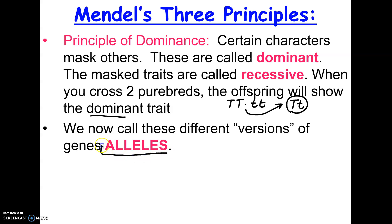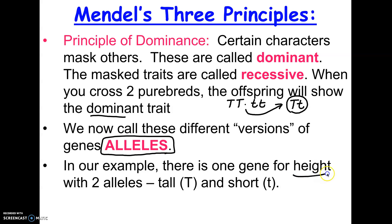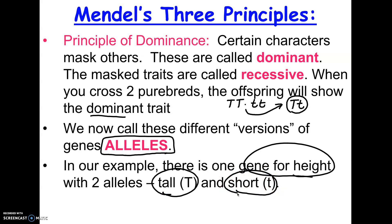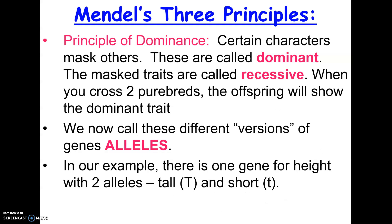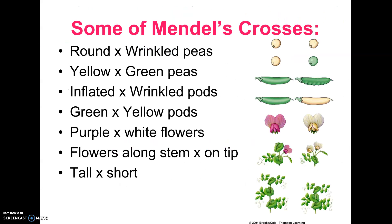We use the term allele to represent a version of a gene. In this cross, there was one gene for height but it had two alleles: big T for tall and little t for short. A chromosome could carry a DNA code in a particular spot that codes for making a tall plant, while the other version of the same chromosome has a slightly different DNA code that codes for making a short plant. Since tall is dominant, you only need one copy of big T to make the plant tall. These are some of the traits Mendel crossed, and every single one showed this principle of dominance.